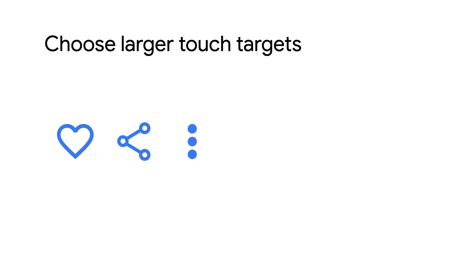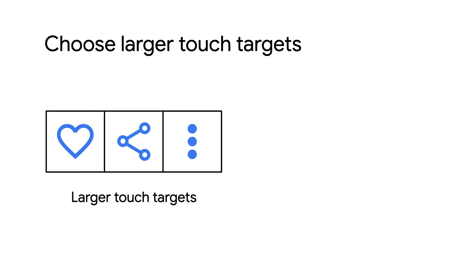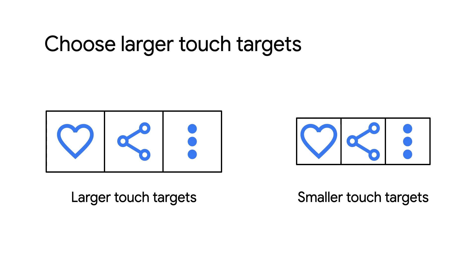Choose larger touch target sizes when you create your app's user interface. You may be tempted to cram as many buttons, clickable images, links, etc. on one screen. But what's the point of doing that if your users may have trouble tapping on them? In the video, we simulated someone's shaking hand and used the smaller and then the larger touch targets to make it easier to select items from the list.